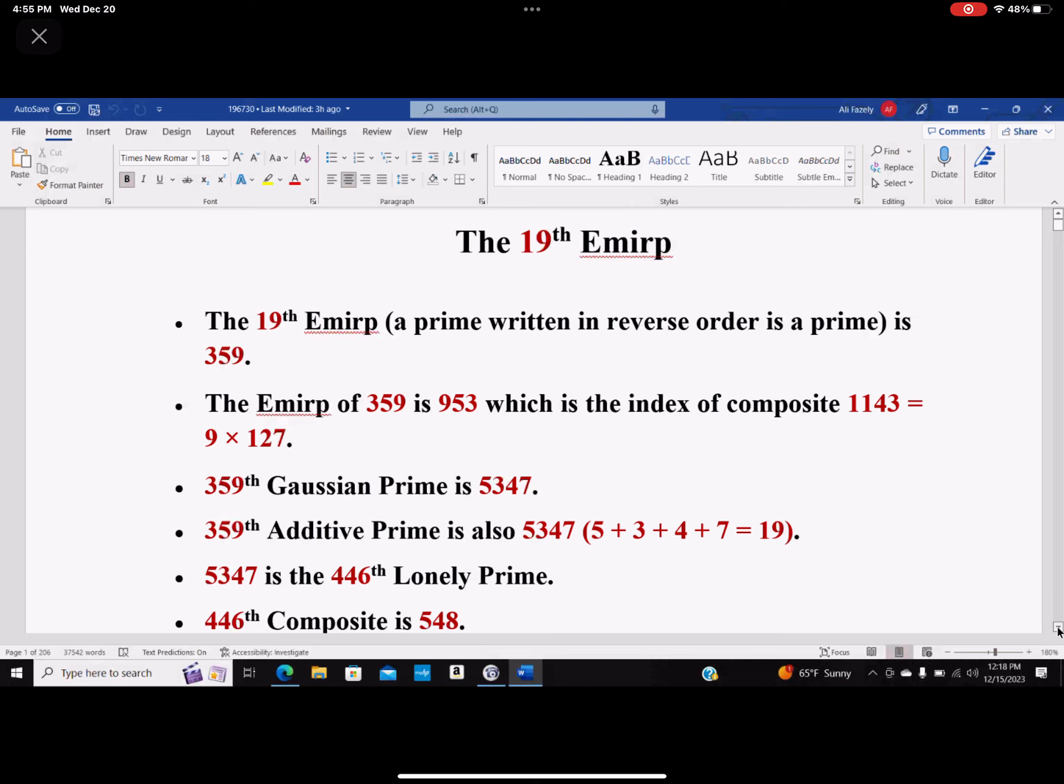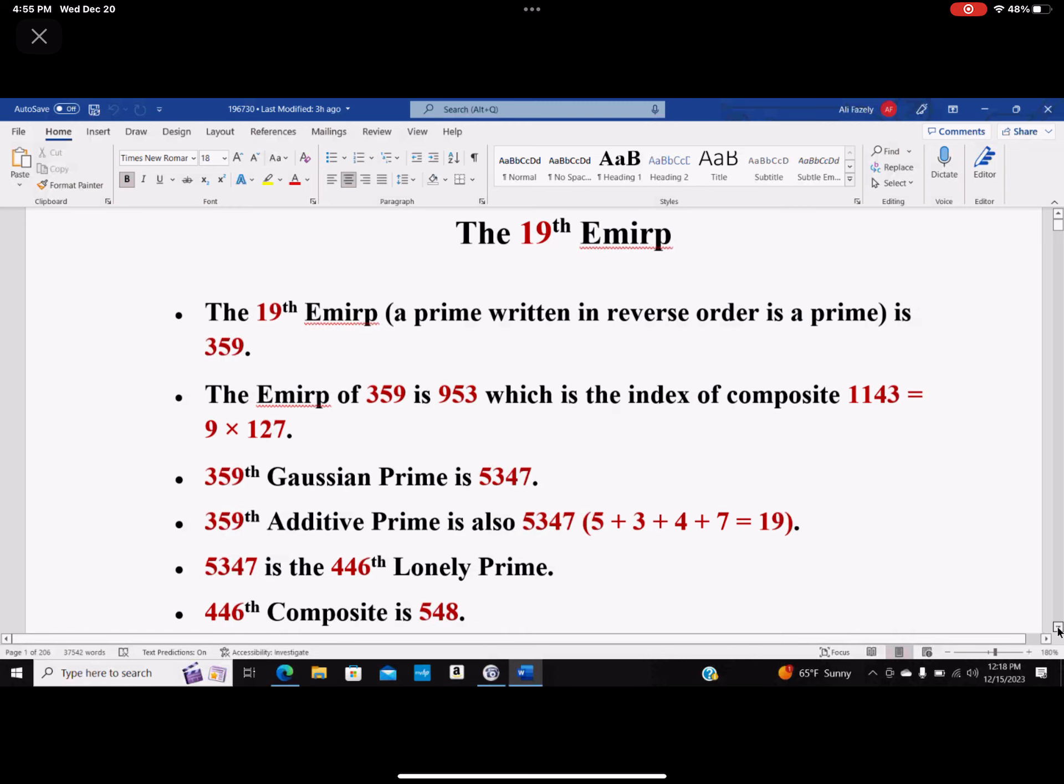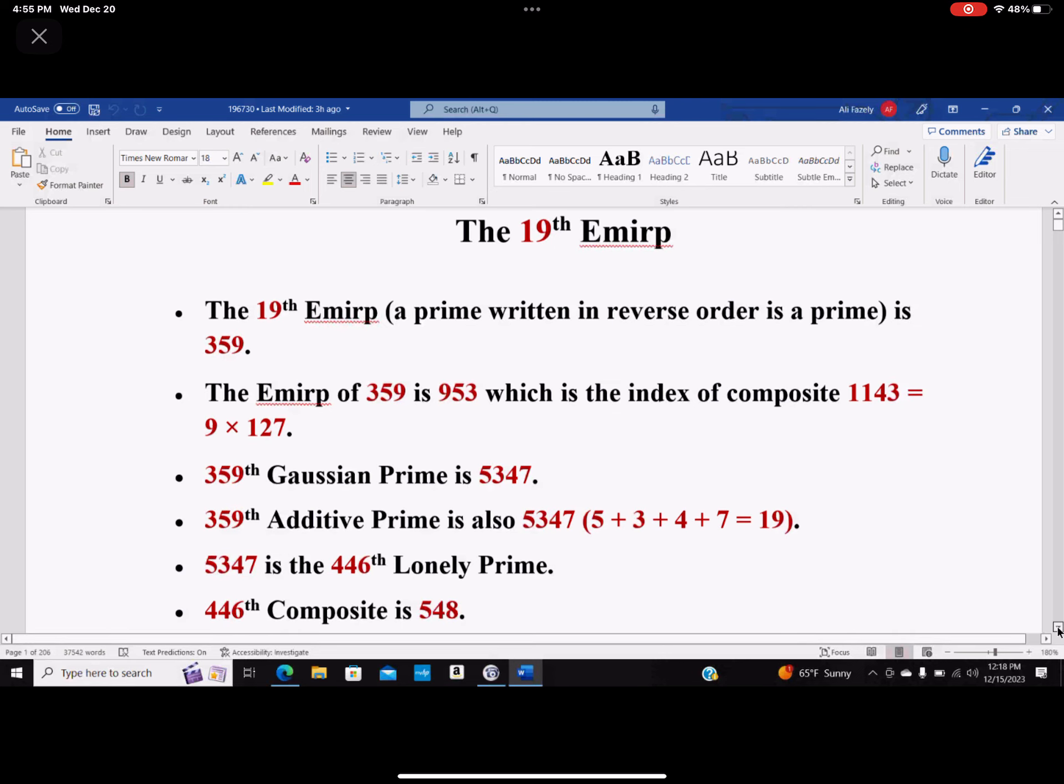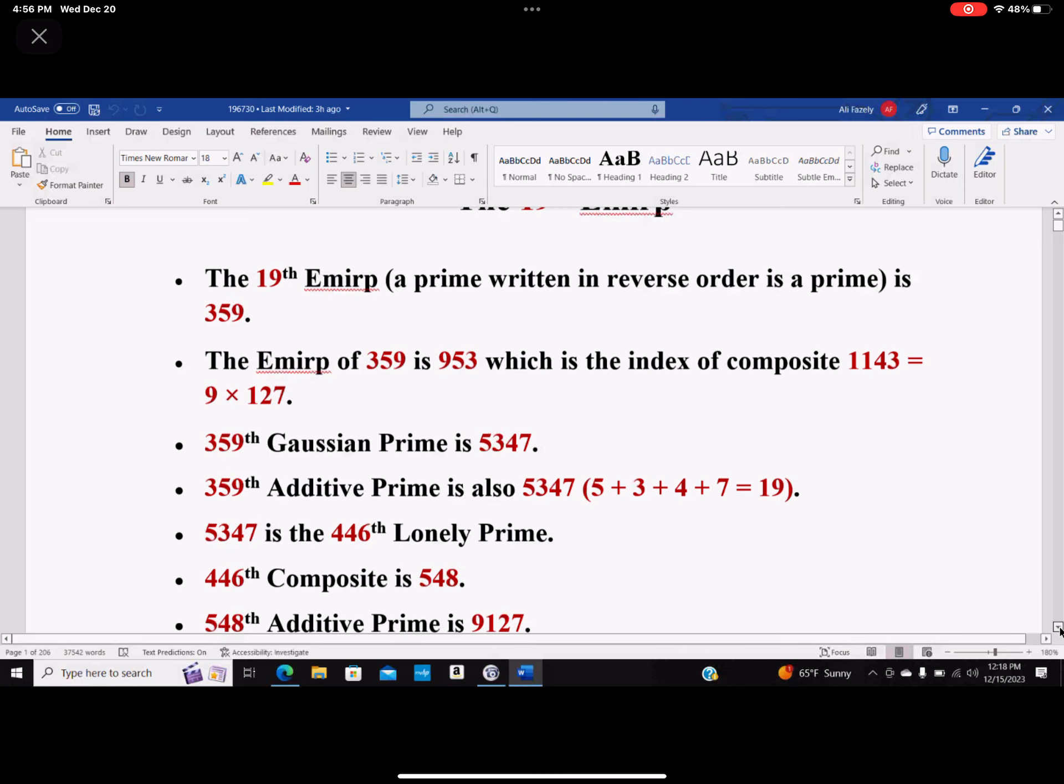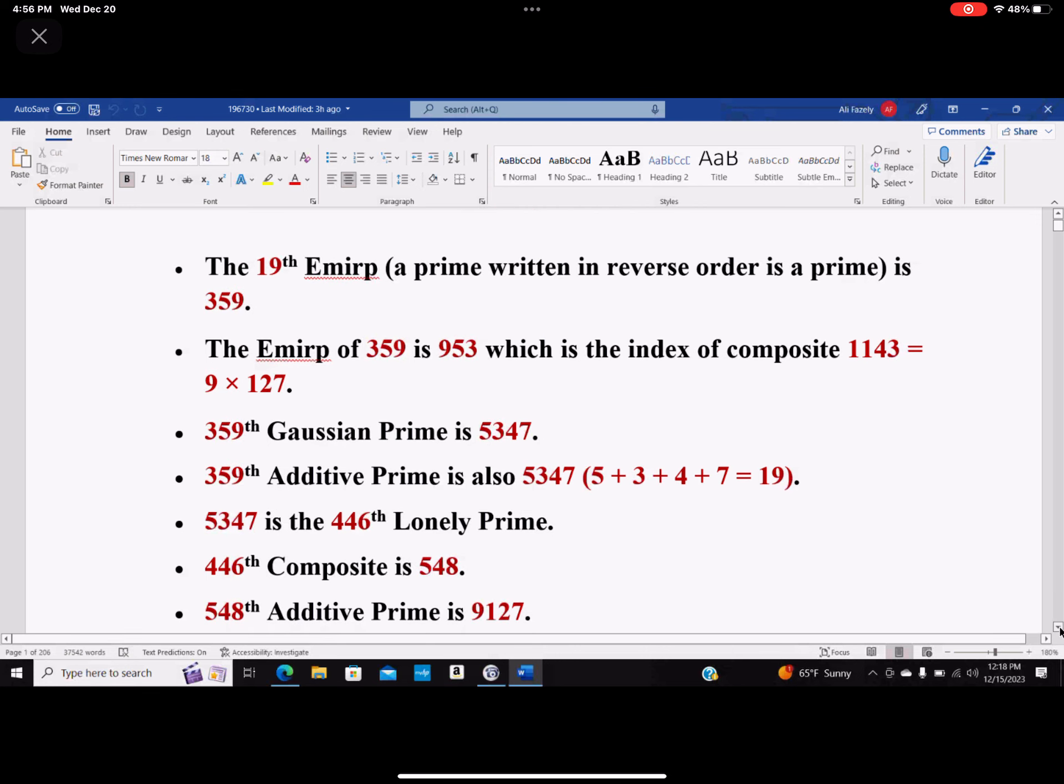I'm sorry, 5347 is called an additive prime. It happens to be the 359th one. So 5347 is also the 446th lonely prime, but 446th composite happens to be 548, and 548th additive prime happens to be 9127.